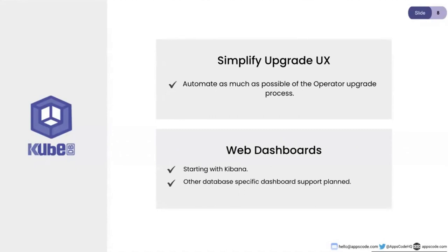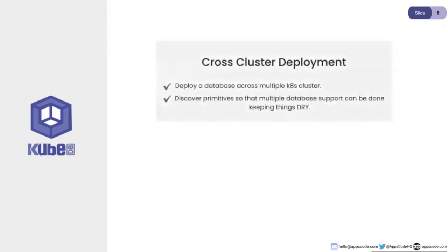We are starting with Elasticsearch and Kibana as the most frequently requested, but looking to do it for other databases as well. Postgres is an important one, and there are some generic tools that can work with multiple databases. There are interesting questions around how authentication for those systems will work, but we'll start with at least root access to the secret being usable in a web-based UI, with all the necessary authentication to make sure everything works correctly.